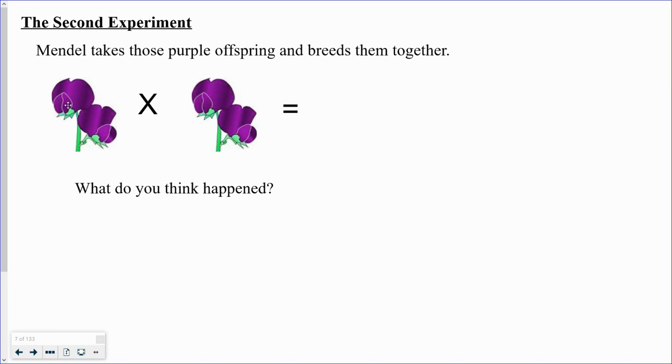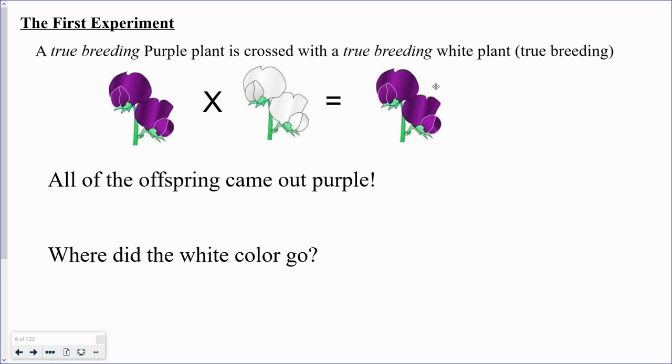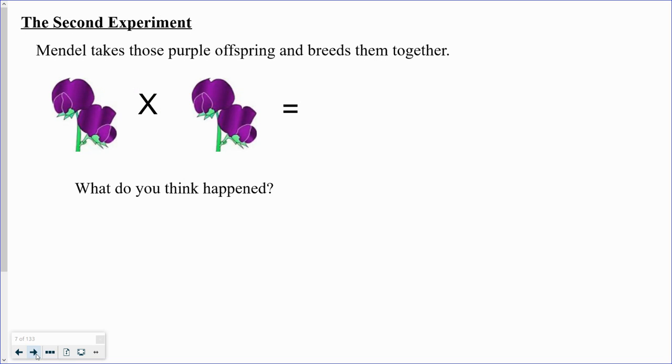So Mendel says well okay, I'll take the purple ones that he got from this cross here. Remember we're trying to figure out what happened to the white. So he takes all of these offspring and now he breeds them together.